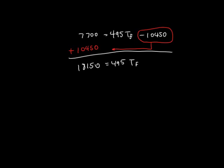Now, we divide both sides by 495. This will cancel the number in front of Tf. When we do the division, we'll get that T final is 36.67 degrees Celsius. Rounded to the proper number of significant figures, we can say this is 36.7 degrees Celsius.